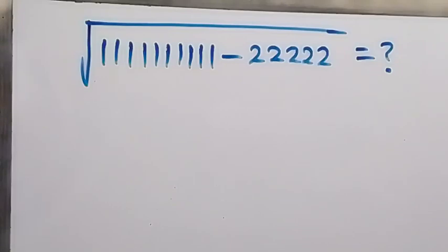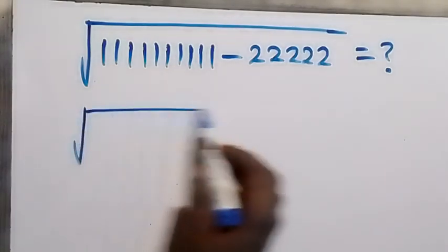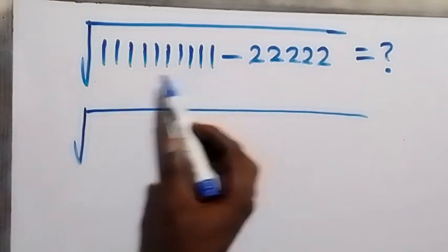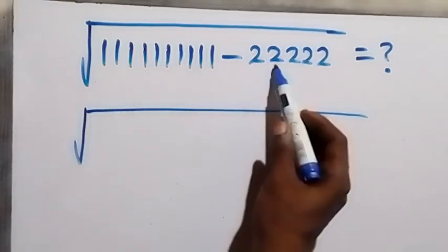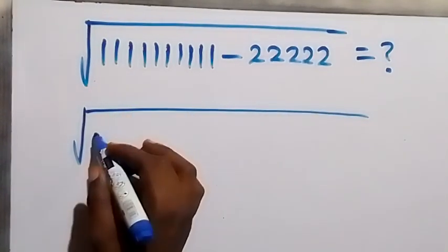Hello, you are welcome. We want to simplify this nice math problem without using a calculator. We can write this again as the square root of a number with 10 ones — that is, ones in 10 places — and also two in five places.